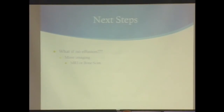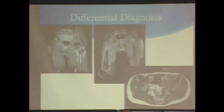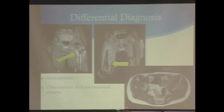But what if there wasn't an effusion? Similar presentation but no effusion — think about MRI or bone scan. MRI is good if you know the area concerned. Bone scan is useful if the exam is difficult and you can't get the child to cooperate. The differential would then include osteomyelitis — such as osteomyelitis with a subperiosteal abscess, which is an operative indication — or a psoas abscess.